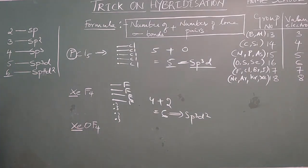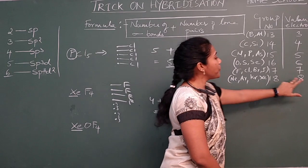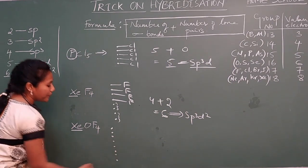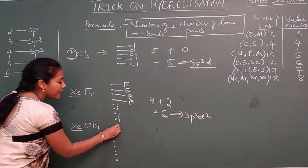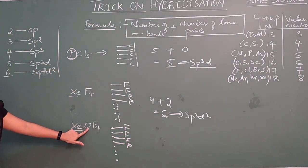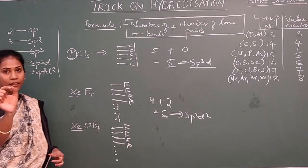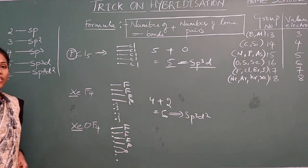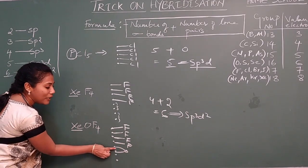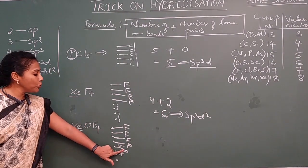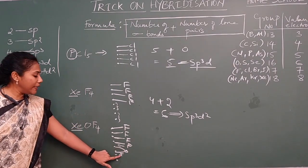Next compound is XeOF4. The central element is xenon, which has 8 valence electrons — put 8 dots. There are 4 fluorines, each taking 1 electron for 4 sigma bonds. For oxygen, bonding between oxygen and another element is always a double bond — so 2 electrons are taken by oxygen. Among those 2 bonds, 1 is sigma and 1 is pi.